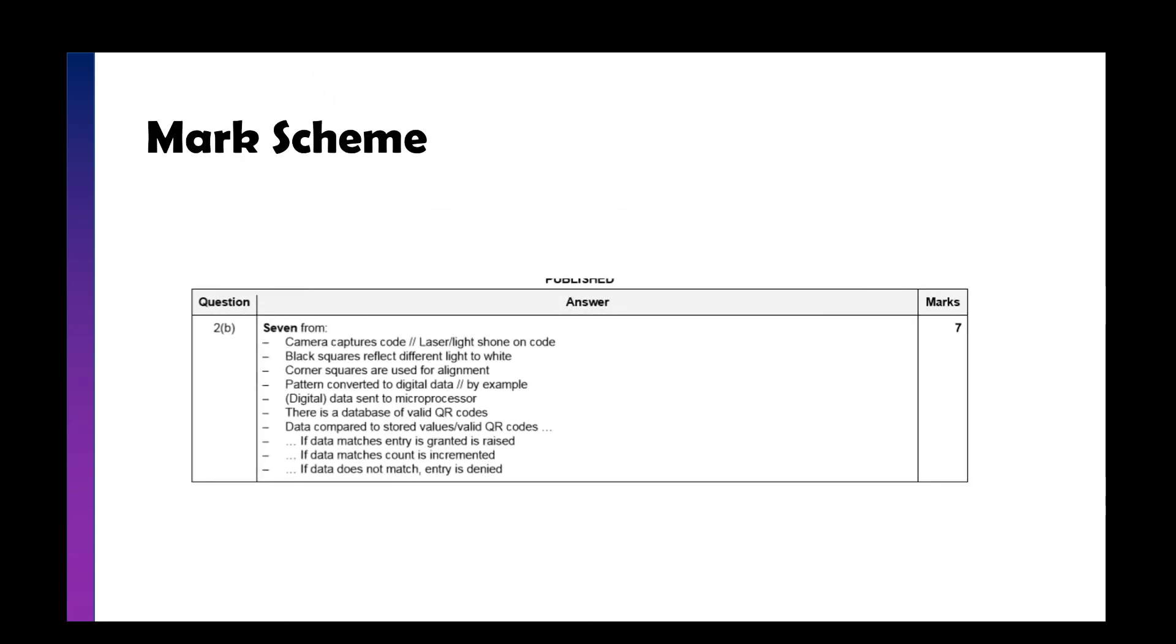So take a look at the mark scheme. We've got the camera taking a picture, talking about how the black squares reflect different light to white. The corner squares are used for alignment. So just use a bit of that understanding of how the QR codes work. The pattern gets converted and sent to the computer or the microprocessor. And then it's a little bit like a sensor question where we apply knowledge of how a microprocessor will make decisions. So it compares to the valid QR codes. If it matches, we let them come in. If not, we don't. If we do let them in, we'll increase the counter so we know how many people have come to the venue.